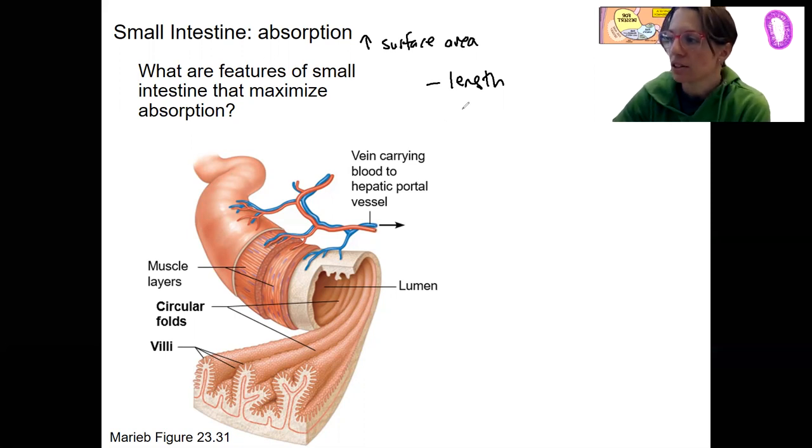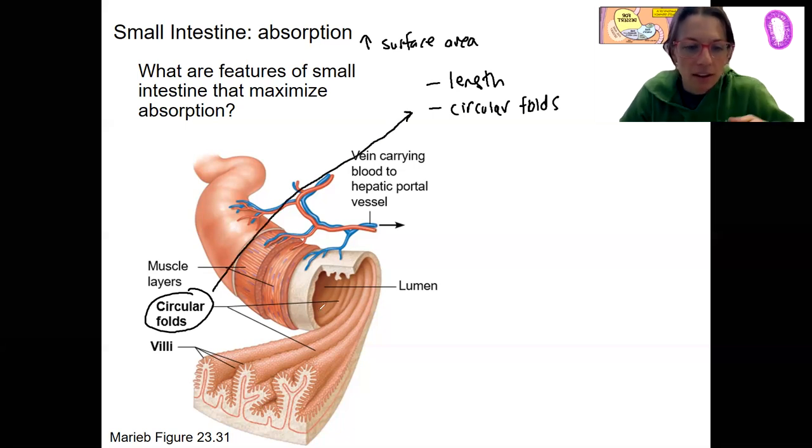Then we've got various structural modifications. First is circular folds. I'm going to go from gross anatomy down to more microscopic. Here are the circular folds. You see them if you cut like a longitudinal section. We often look, you're in lab. You're going to be looking at a cross section so you won't really see them. I can show you a picture.